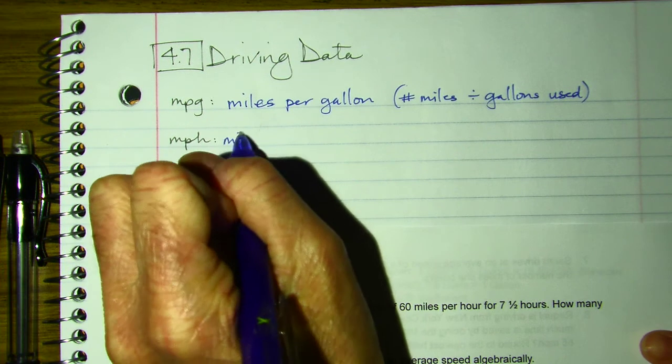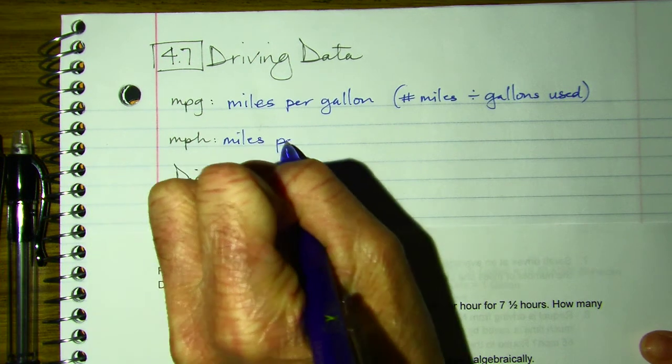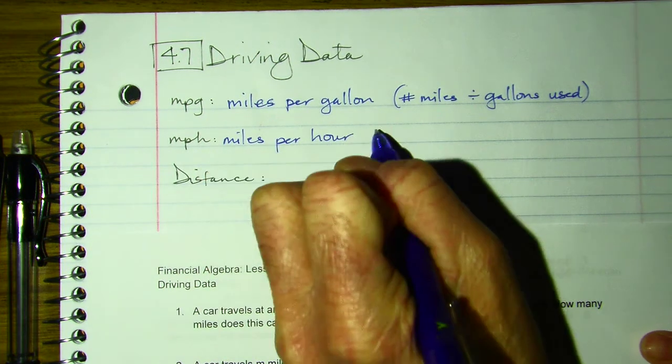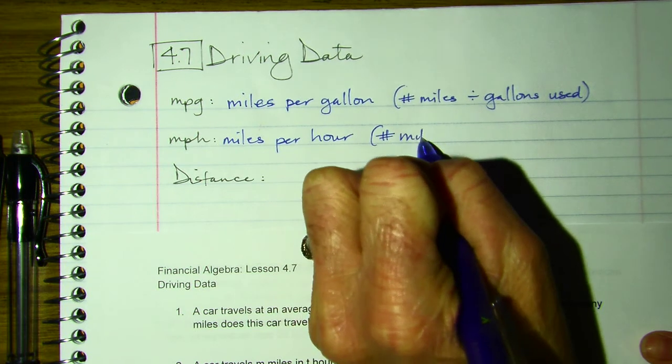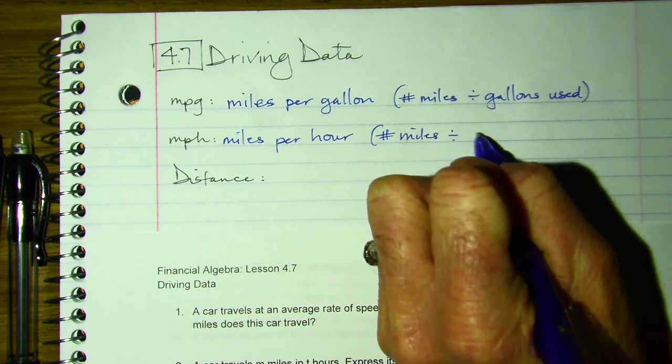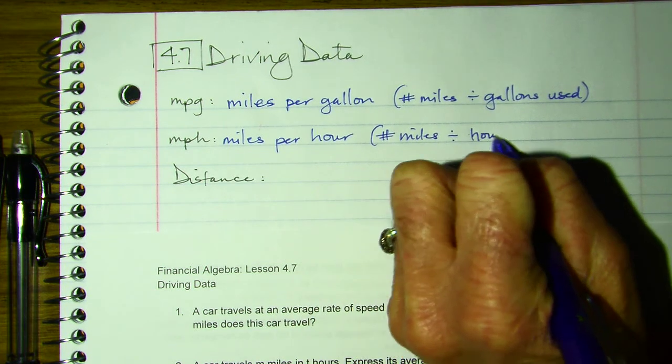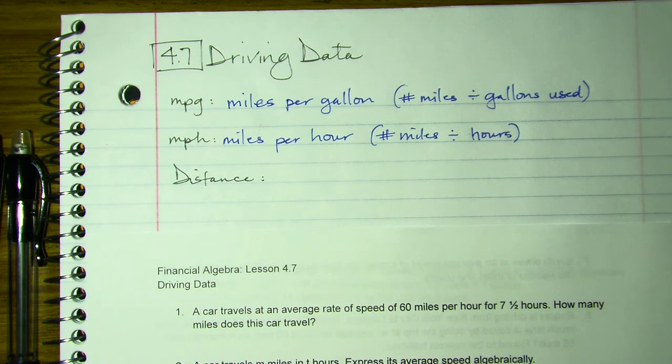MPH is miles per hour. So that would be our total miles driven, our number of miles, divided by hours, and that would tell you how many hours we drove per hour.